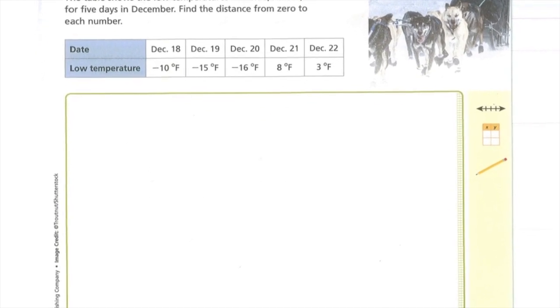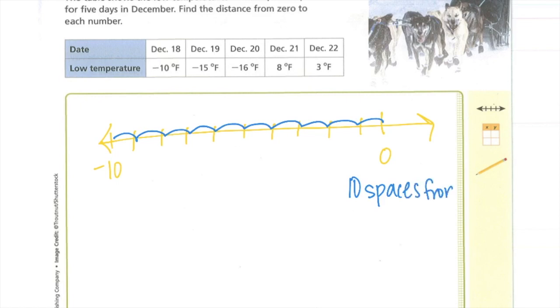On December 18th, it's negative 10. I could use a number line for this. If here's 0, 1, 2, 3, 4, 5, 6, 7, 8, 9, 10. There is negative 10. So it's 1, 2, 3, 4, 5, 6, 7, 8, 9, 10 spaces from 0.